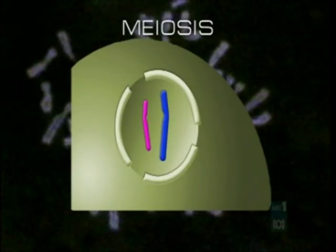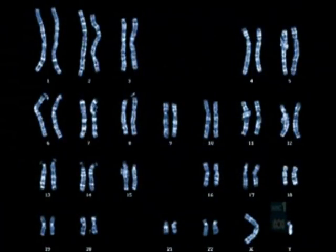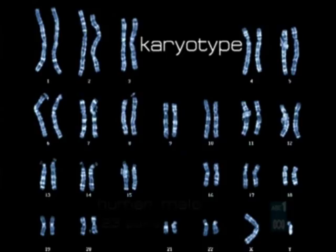These are special cells called germ cells. In a male, they're sperm. In a female, they're eggs. Fertilisation, of course, when a sperm combines with an egg, restores the chromosomes to the original number by supplying new partners. The complete arrangement, laid out in pairs, is called the organism's karyotype. Each species has its own number of pairs.